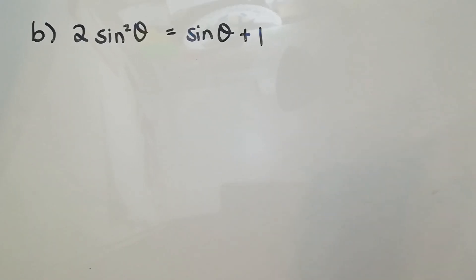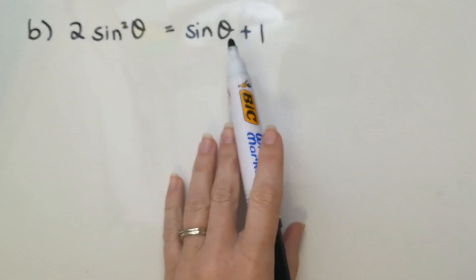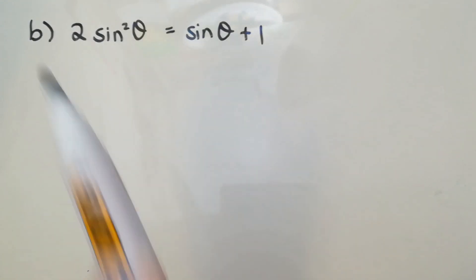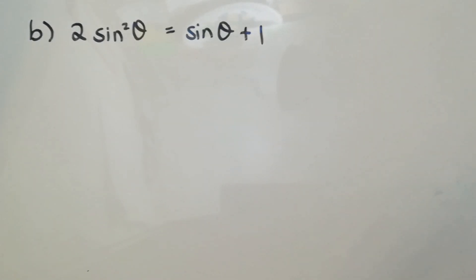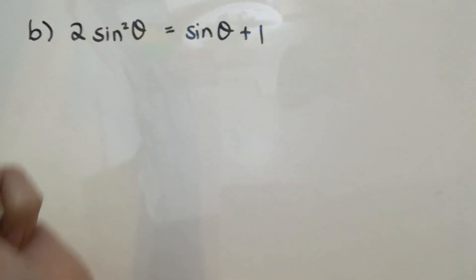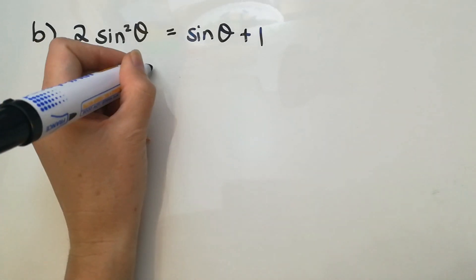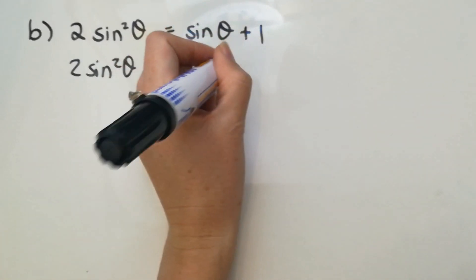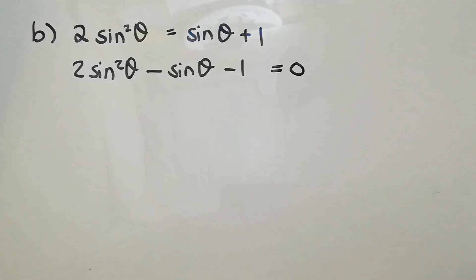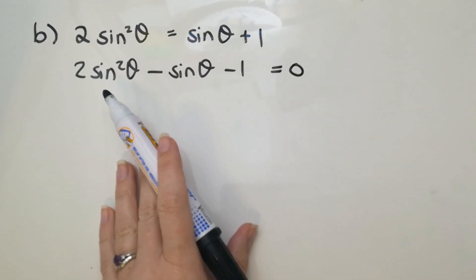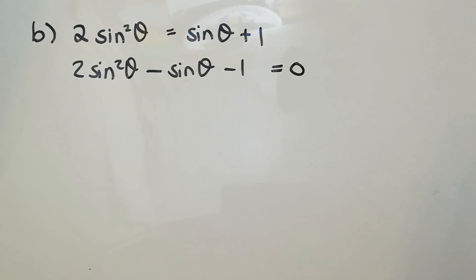In my second example with factorizing, I've again got a squared trig ratio and the same trig ratio to the first power. I want to point out that this is a trinomial. Move things to the left: 2sin²θ minus sinθ minus one equals zero. Now you can see it's a trinomial — three terms, one squared and one not.